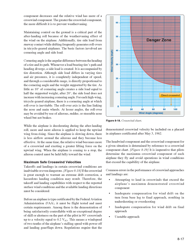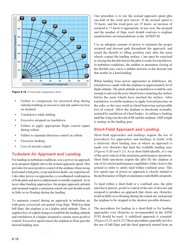Common errors in the performance of crosswind approaches and landings include: attempting to land in crosswinds that exceed the airplane's maximum demonstrated crosswind component; inadequate compensation for wind drift on the turn from base leg to final approach resulting in undershooting or overshooting; inadequate compensation for wind drift on final approach resulting in an unstable approach; failure to compensate for increased drag during sideslip resulting in excessive sink rate and too low an airspeed; touchdown while drifting; excessive airspeed on touchdown; failure to apply appropriate flight control inputs during rollout; failure to maintain directional control on rollout; excessive braking; and loss of aircraft control.